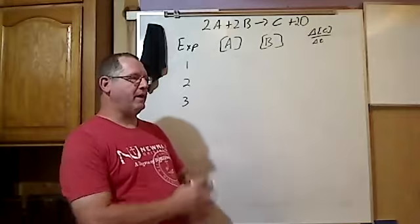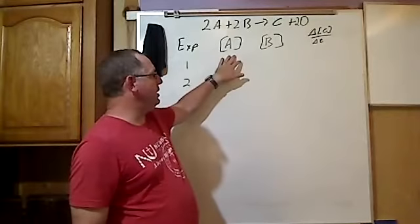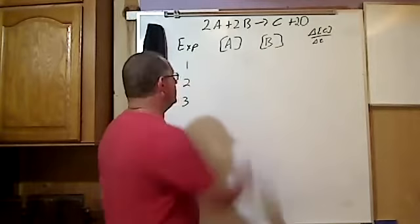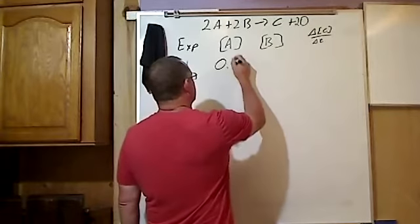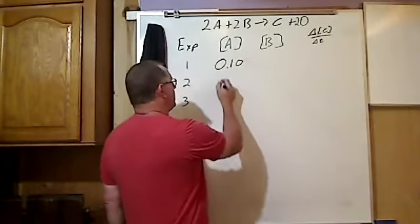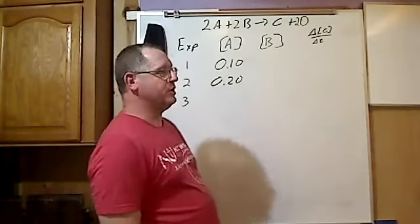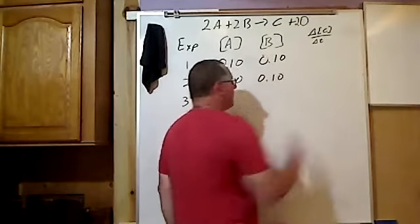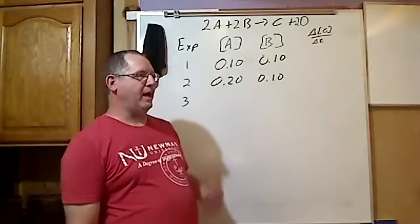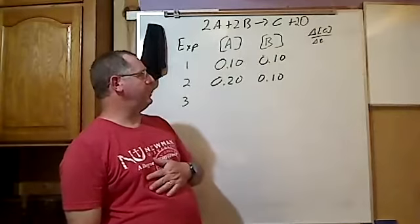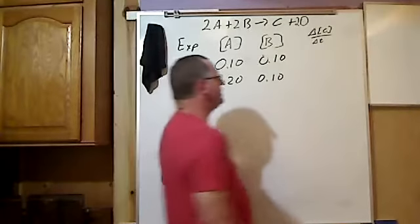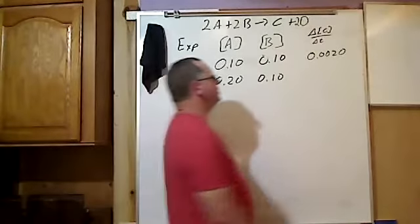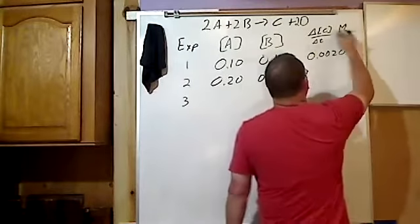So if we want to find out what effect A has on the rate of the reaction, I need to do two experiments where B is held constant. So let's say I go one where A is 0.1 molar, another where A is 0.2 molar, in both of these I keep B constant. And just some theoretical data here, if I were to do this, I would find that that would be 0.0020 and this is molar per second.